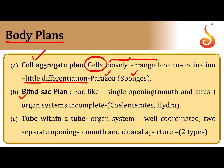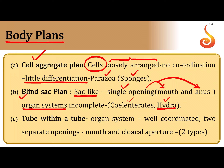The second type is the blind sac plan. In this plan, the body encloses a sac-like structure which opens through a single opening. This single opening performs the function of both the mouth and the anus — food is ingested through this opening and undigested matter is eliminated through the same opening. So the digestive system is incomplete. This kind of blind sac plan is seen in members of phylum Coelenterata, the best example being Hydra.